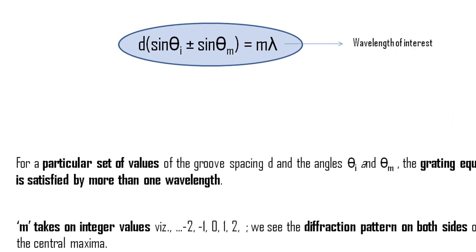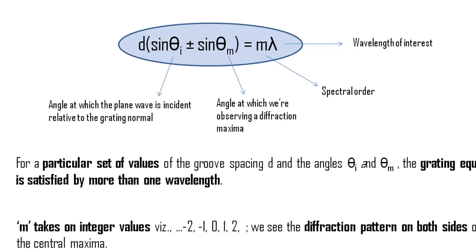Let's pause and explore the grating equation for a while. Lambda is the wavelength under consideration. M is what we call the spectral order, or simply the diffraction order. Theta sub m is the angle at which we are observing the diffraction maxima. Theta sub i is the angle at which the incident plane wave meets the grating relative to the grating normal.